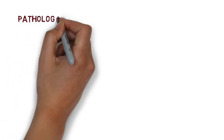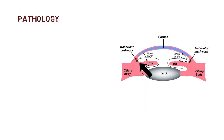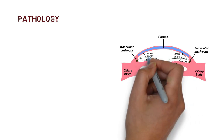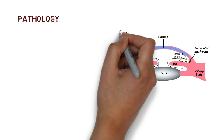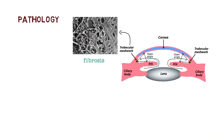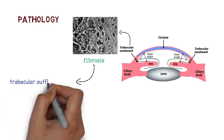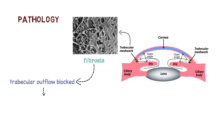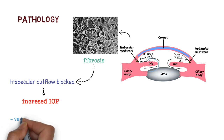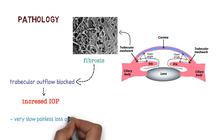The pathology involves the trabecular meshwork. Due to pathological conditions, there is resistance in the flow of aqueous humor, causing gradual fibrosis. This fibrosis blocks the trabecular outflow, resulting in increased intraocular pressure. This gradual fibrosis causes very slow and painless loss of vision.